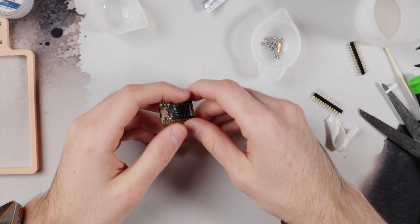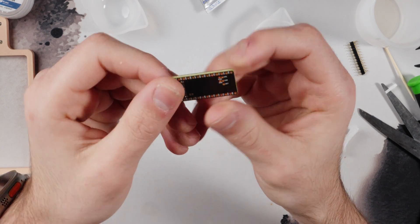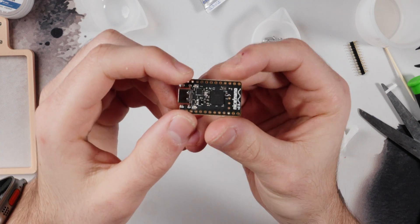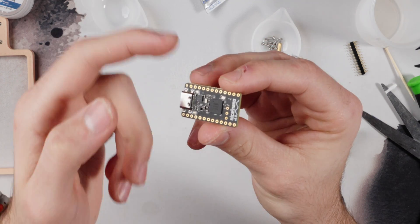Before I actually wire everything up, I wanted to actually talk about this right here, which is the Nice Nano. It's basically just a drop-in replacement for the Pro Micro, meaning that it has basically the exact same I/O as a Pro Micro, so you can easily swap between a Pro Micro and this if you want to make a wired build or a wireless build with the same exact key layout.